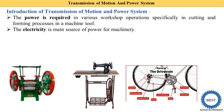Electricity is the main source of power for machinery. At home, electrical energy is converted in various ways: in lights, electricity is converted into light energy; in a grinder, electrical energy is converted into mechanical energy using electric motors; and in a fan, electricity is converted into mechanical energy — that is, rotational energy.